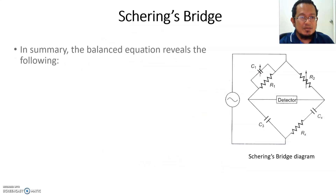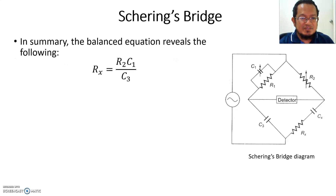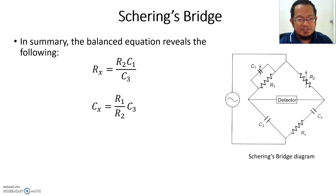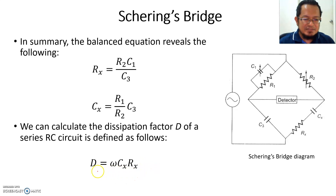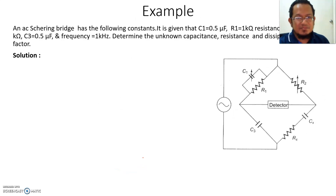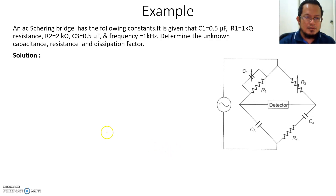In summary, the balance equations reveal two formulas: RX = R2·C1/C3 and CX = C3·R1/R2. If you don't remember these, you can always rederive them. There is also another term called the dissipation factor for a series RC circuit, defined as D = ω·CX·RX, where ω is the angular frequency.